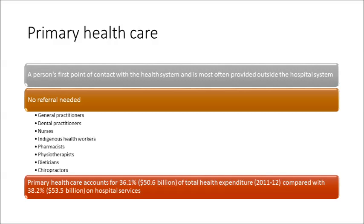What's interesting is that primary health care accounts for almost as much spending as hospital services — about 36% of the total health expenditure recorded in 2011-2012, compared to 38% for hospital services. You'll find information about these statistics in the Ducat textbook, particularly Chapter 2, which is related to how much does Australia spend on health care, and also Chapter 8 in Ducat covers primary health care in much more detail.